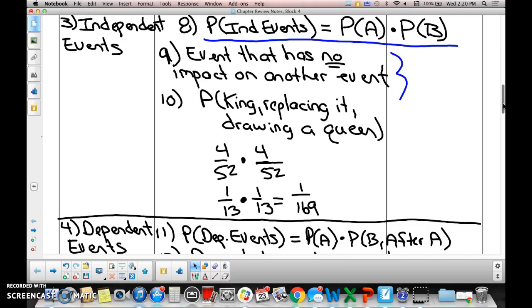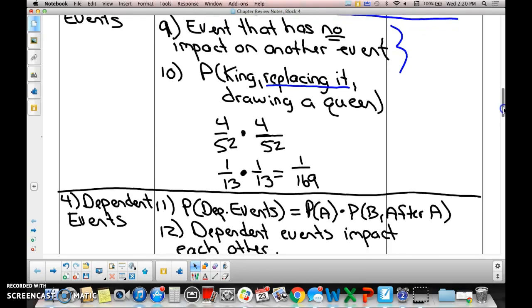If you replace a card after drawing it, and then draw a second card, would that be considered a dependent or an independent event? An independent event, because the first draw had no impact on the second draw, right? Correct. So look at the example of number 10.